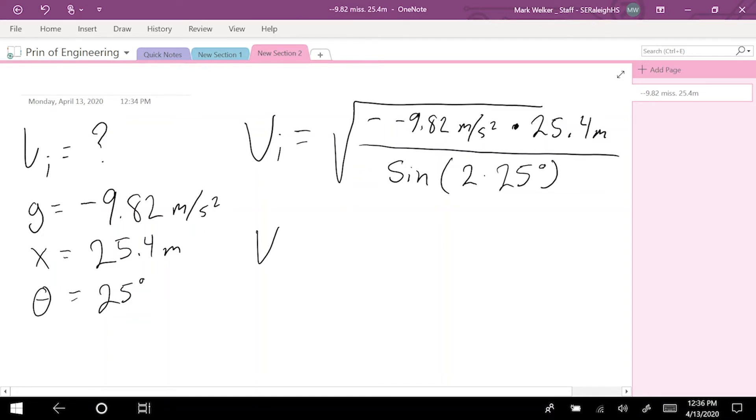Simplifying that down, the initial velocity is the combined square root of - negative cancels negative - so 9.82 meters per second squared times 25.4 meters over sine of 50 degrees.